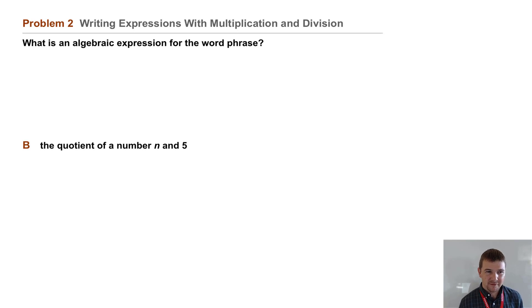Part B: the quotient of a number n and 5. So we need to identify that quotient is the result of division or the answer in a division problem. Our word phrase on the left: the quotient of a number n and 5. So the expression on the right: n divided by 5.